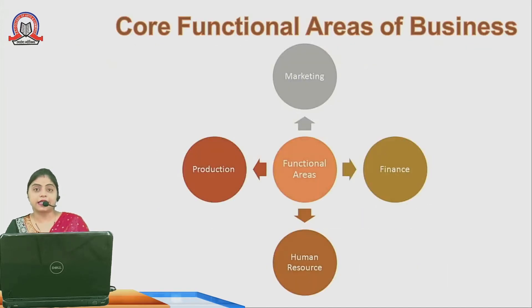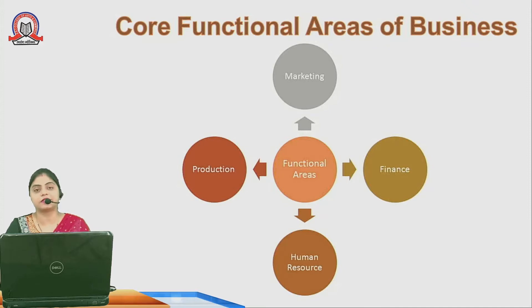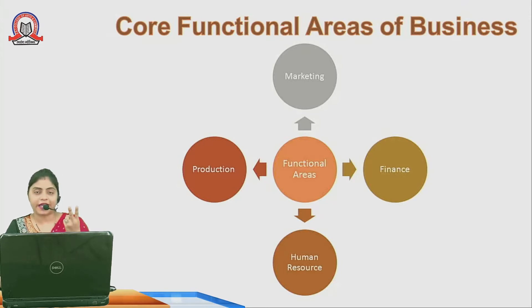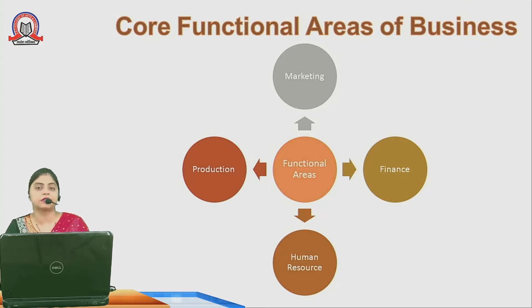Human resource management is one of the core functional areas of each and every business organization. Apart from that, there are three other core functional areas: marketing, finance, and production. These are the four core functional areas of every business organization.